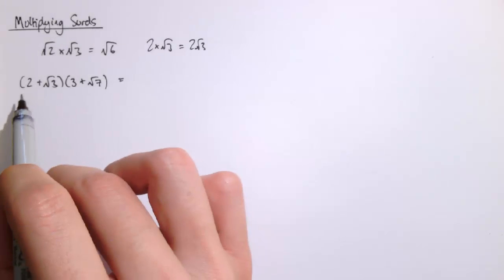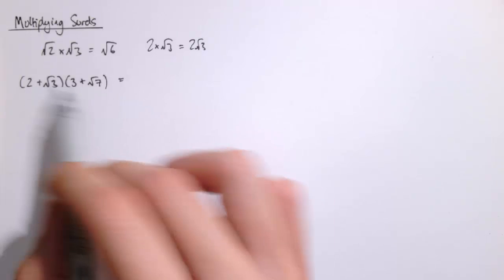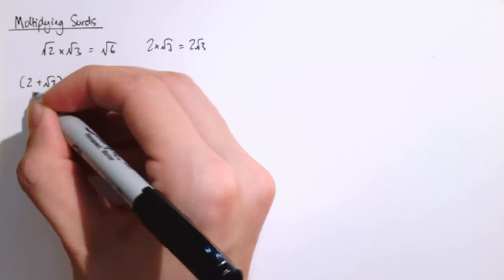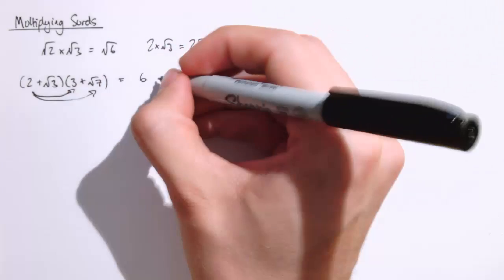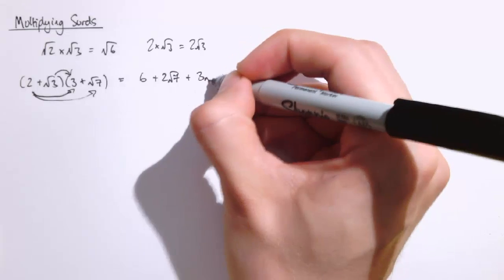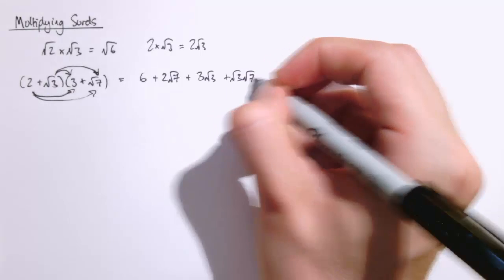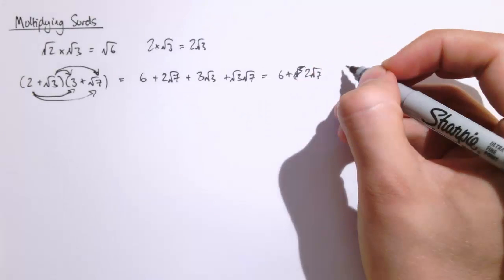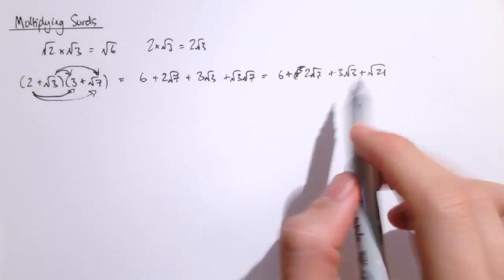What we want to do is multiply each of the terms in the left-hand bracket by each of the terms in the right-hand bracket, in exactly the same way we do for multiplying out algebraic brackets. So we do 2 times 3 to get 6, then 2 times the square root of 7, then the square root of 3 times 3 which is 3 root 3, and finally the square root of 3 times the square root of 7 which is root 21. That gives us 6 plus 2 root 7 plus 3 root 3 plus root 21, and we can't combine any of these terms further because they're different surd expressions.